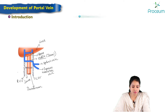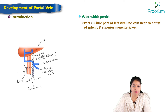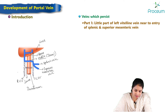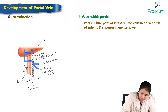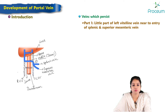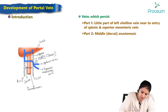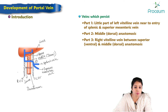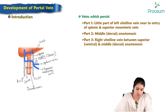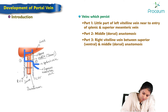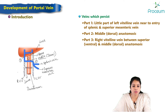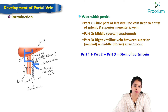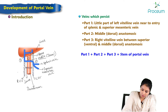Now we look at the veins which persist. Part 1 is the small part of the left vitelline vein near the entry of the splenic and mesenteric veins. Part 2 is the middle dorsal anastomosis. Part 3 is the right vitelline vein between the upper ventral and middle dorsal anastomoses. Joining parts 1, 2, and 3 together forms the stem of the portal vein.